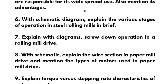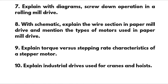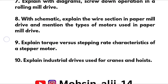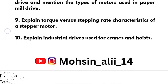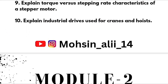Seventh: Explain with diagram the screw-down operation in a rolling mill drive. Eighth: With a systematic diagram, explain the wire section in paper mill drive and mention the types of motors used in paper mill drive. Ninth: Explain torque versus stepping rate characteristics of a stepper motor. Tenth: Explain industrial drives used for cranes and hoists.